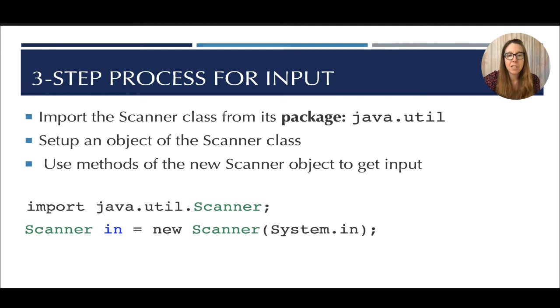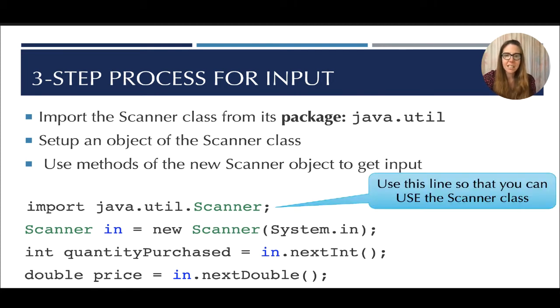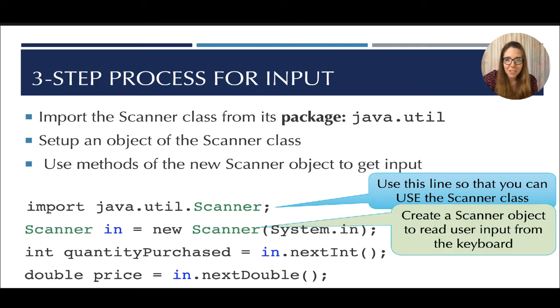And finally, the third step is to use methods of the new scanner object to get input. So now we can use all sorts of methods that come with that scanner object. And in fact, on the third line of a program, we're reading in the next integer that the user types. And on the final line, we're reading the next double. So the next decimal point, floating point number that is entered. And so this line is used so that you can use the scanner class. This creates a scanner object to read that user input from the keyboard. After that, we're free to make use of our new scanner.